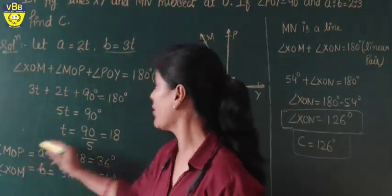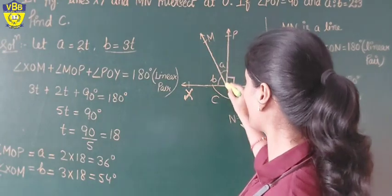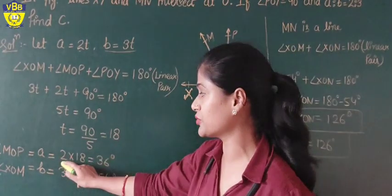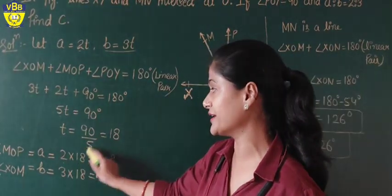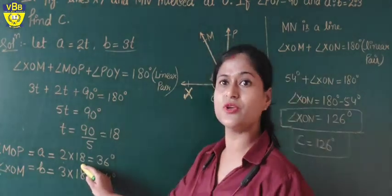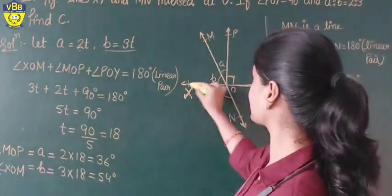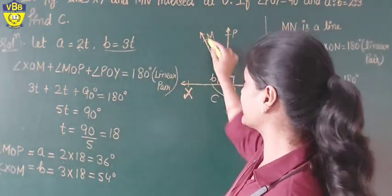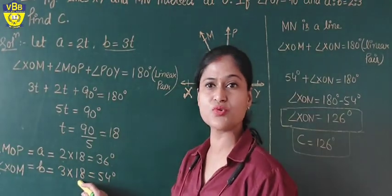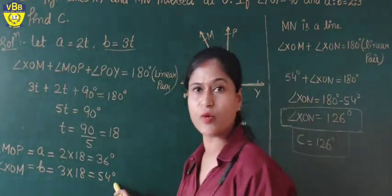Angle MOP, which is A, equals 2T: 2 into 18 equals 36 degrees. Angle XOM, which is B, equals 3T: 3 into 18 equals 54 degrees.